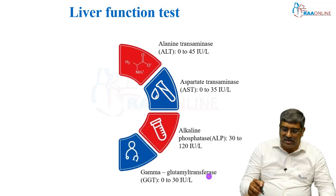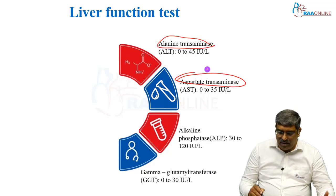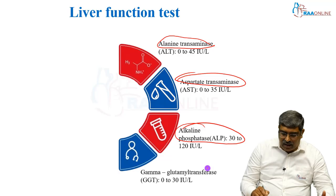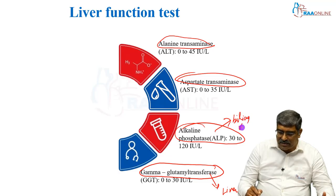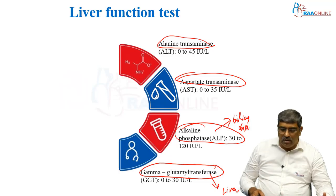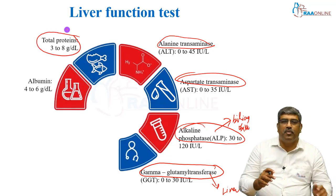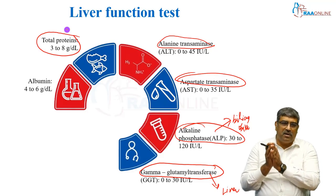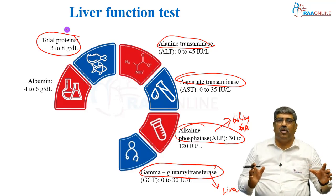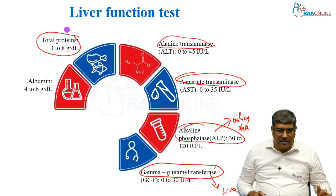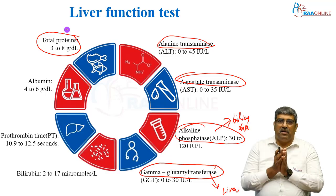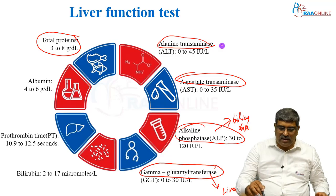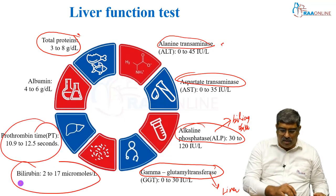Coming to liver function test, this includes various enzymes: alanine transaminase, aspartate transaminase, alkaline phosphatase, and gamma-glutamyl transferase — elevated with liver injury or biliary obstruction. Apart from that, proteins are assessed; normal total protein is around 3 to 8 grams per deciliter, with albumin as the main component at around 4 to 6 grams per deciliter. The test also includes prothrombin time and bilirubin.